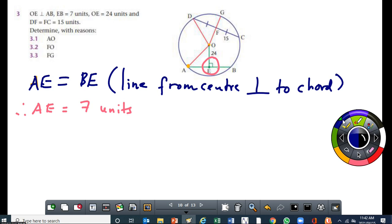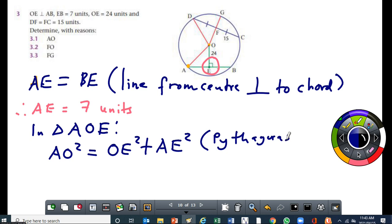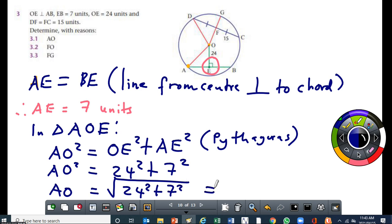Once I have that, now I can identify my triangle. I'll say in triangle AOE, if I use the theorem of Pythagoras in that triangle, it will be AO² = OE² + AE² and the reason is Pythagoras. Then AO = √(24² + 7²). What answer do you get? You get 25 units. So AO is equal to 25. That's 3.1 done.